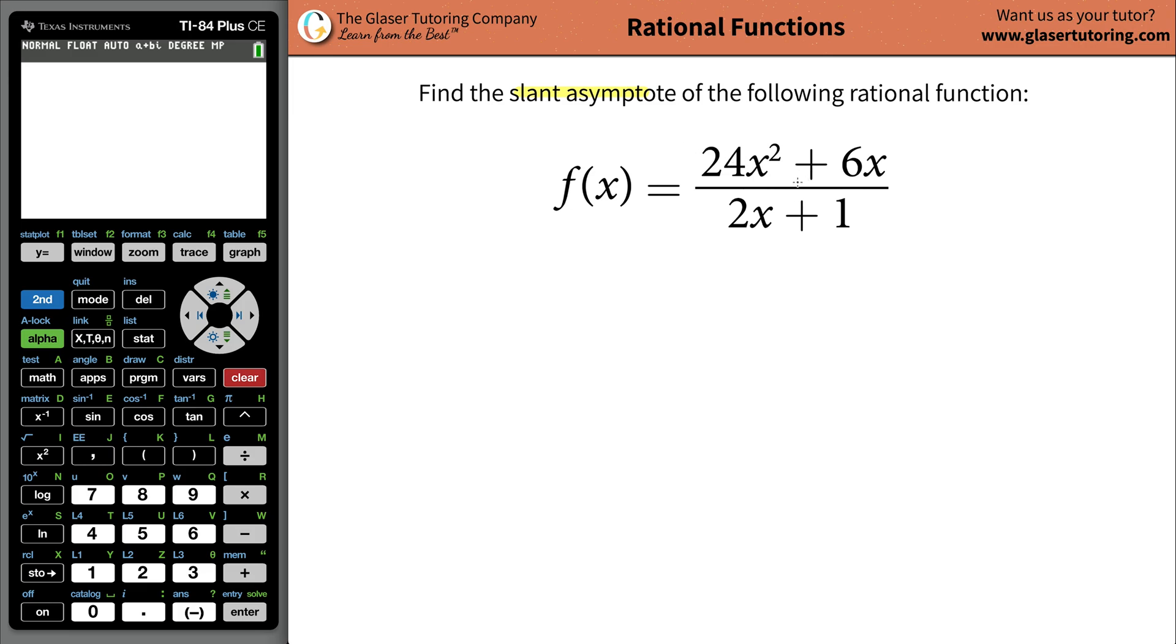So we're always going to have a slant asymptote whenever we have a rational function, which is basically saying you have a polynomial function in the numerator and in the denominator, and the highest power of your variable in the numerator, in other words, right here, the 2, is higher than the highest power of x in the denominator, which would be a 1. You're always going to have a slant asymptote in that case.